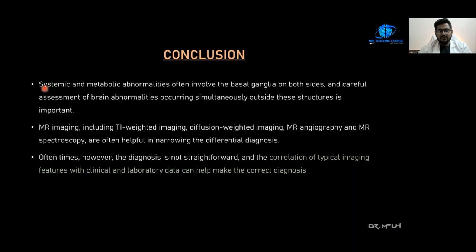In conclusion, systemic and metabolic abnormalities often involve the basal ganglia bilaterally, and careful assessment of brain abnormalities occurring simultaneously outside these structures is important. MR spectroscopy imaging should be included in the protocol. MR imaging with T1, diffusion-weighted imaging, MR angiography, and MR spectroscopy are often helpful in narrowing down the differential diagnosis. The diagnosis is not always straightforward, and correlation of typical imaging features with clinical history and laboratory data can help make the diagnosis clear and correct.